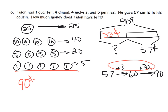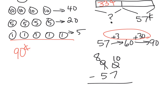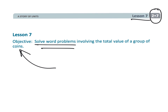That's one way we could use the arrow method. Another idea could be to stack it up: 90 minus 57. Right now we don't have any ones to take away seven ones, so let's do some regrouping — we can take one of those tens and turn it into 10 ones. Now we do 10 ones take away seven ones, which gives us three ones. And eight tens take away five tens leaves us with three tens. So our result is 33 cents. That wraps up grade two, module seven, lesson seven: solving word problems using coins and tape diagrams.